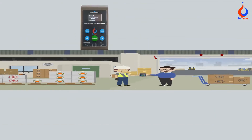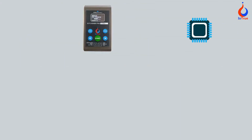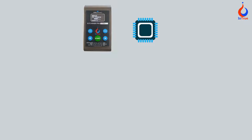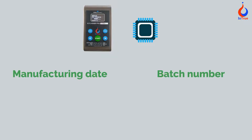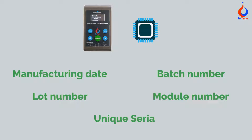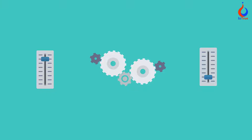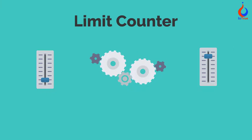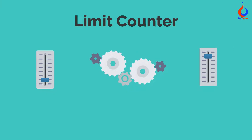IO Flasher can also write the following data directly to your microcontroller memory: manufacturing date, batch number, lot number, module number, unique serial for each device, or anything else decided on the production floor. You can also limit the production quantity by using the limit counter feature of the programmer.